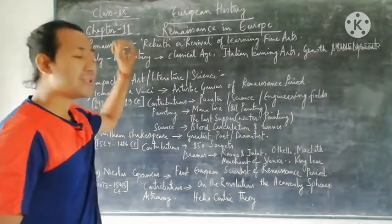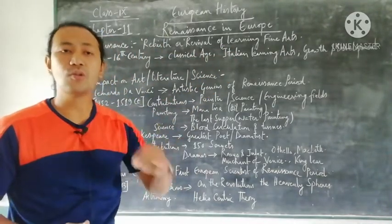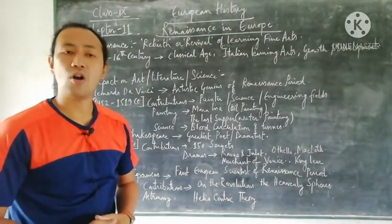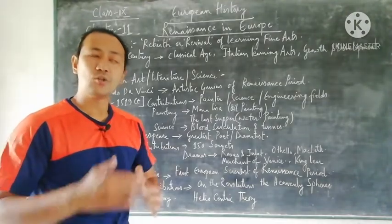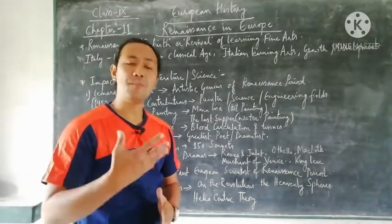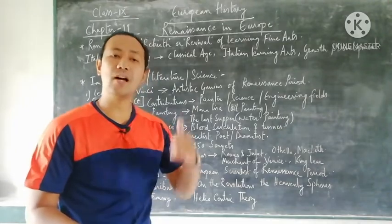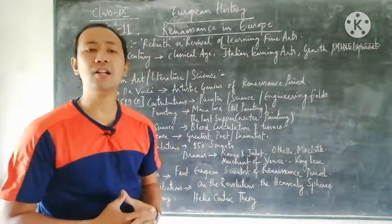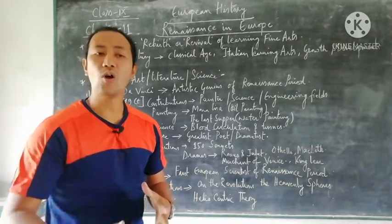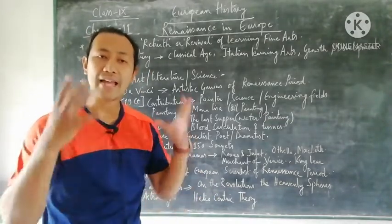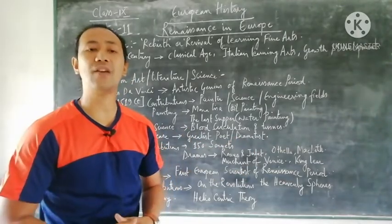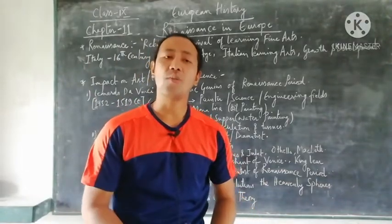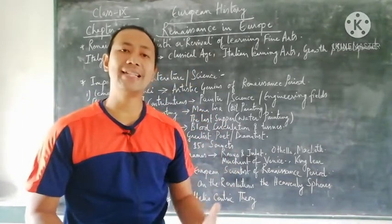The Renaissance took place from the 16th century in a European country called Italy, with its capital Rome. Italy holds major significance in the Renaissance, through arts, literature, painting, and various other topics. People could gain a lot of knowledge and ideas from the efforts of contributors and painters during the 16th and 17th centuries.